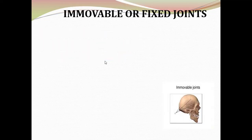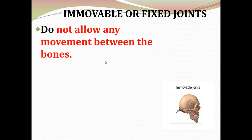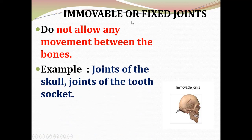First, immovable or fixed joints. These joints do not allow any movement between the bones. Examples of immovable or fixed joints are the joints of the skull and the joints of the tooth socket.